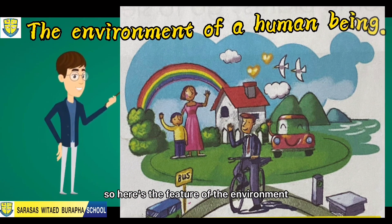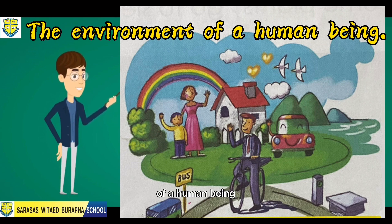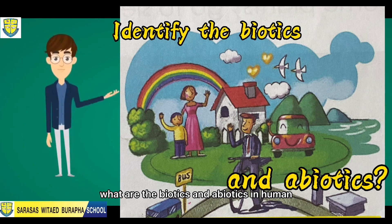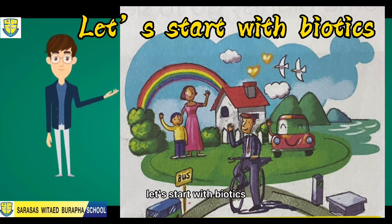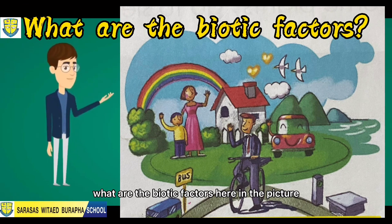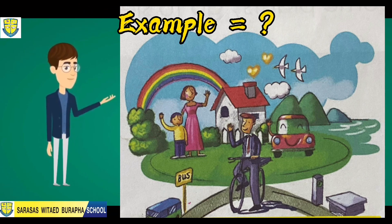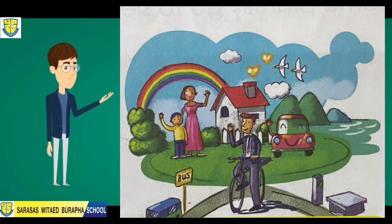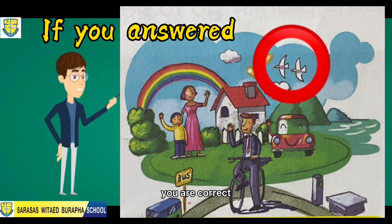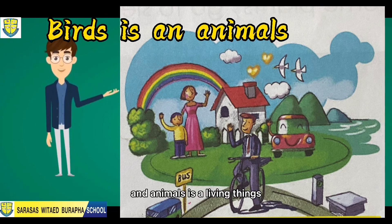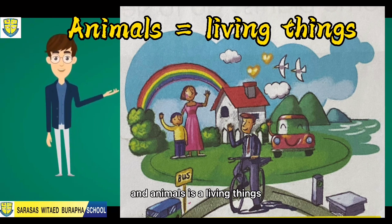Now let's discuss the environment of a human being. Here's the picture of the environment of a human being. Let's identify the biotic and abiotic factors. Starting with biotic factors — biotic factors are living things. Can you give an example? If you answered birds, you are correct, because birds are animals and animals are living things.